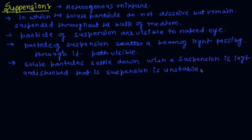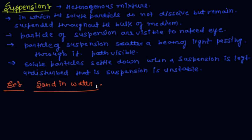Suspension is unstable and the particles cannot be separated from the mixture by filtration. Now, an example of suspension is sand in water. If I mix sand in water and leave it for some time, then the sand particles settle down when the suspension is left undisturbed. So this is called an unstable mixture.